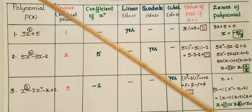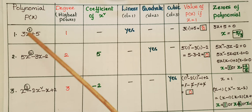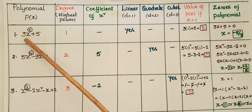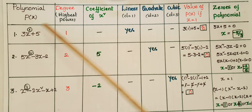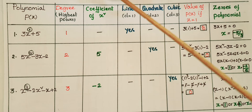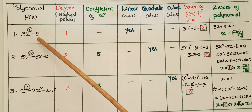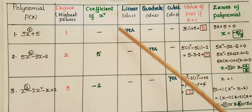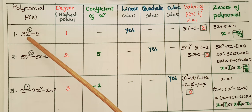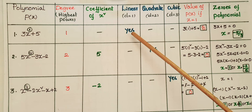For example, if you take 3x plus 5, here the degree is the highest power of the variable. Here x is the variable and the power of x is 1, so the degree is 1. There is no x square term, so there is no coefficient of x square, and it is a linear polynomial because the degree is 1.